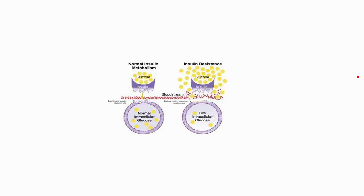This image shows the comparison of a normal insulin response and an insulin-resistive response. When the digestive system breaks down food to produce glucose, it is absorbed into the bloodstream and the body's glucose levels rise. This can be explained through the following flowchart.